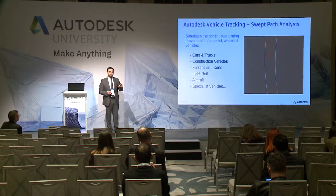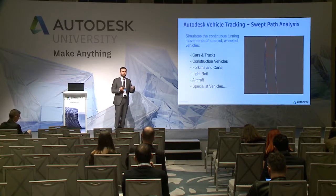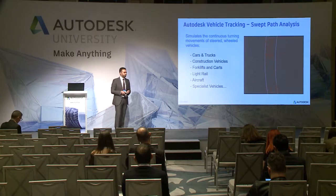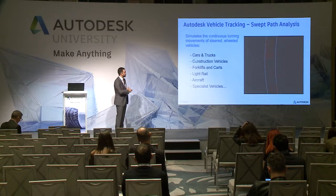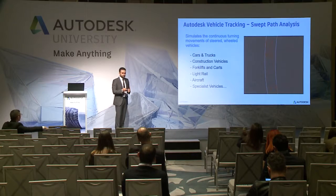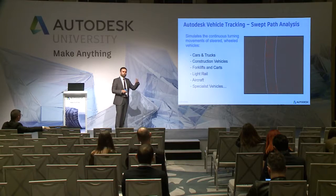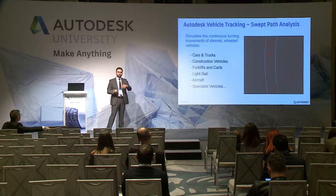Autodesk Vehicle Tracking addresses the movement of many types of vehicles. We have a huge library of over 1,000 vehicles including cars and trucks, construction vehicles, forklifts and carts, light rail, aircraft, and special vehicles. Everything you need is found there — whether it's a Boeing 777 or a specific truck.